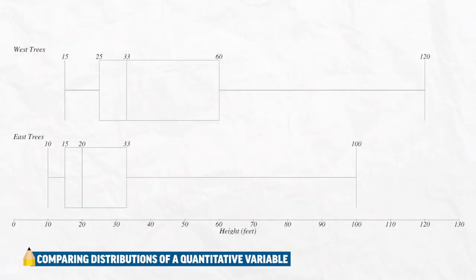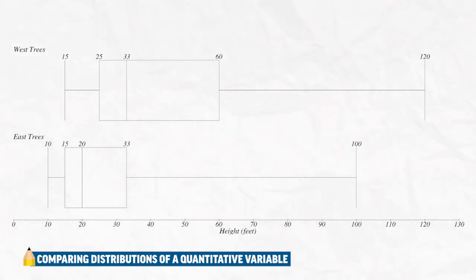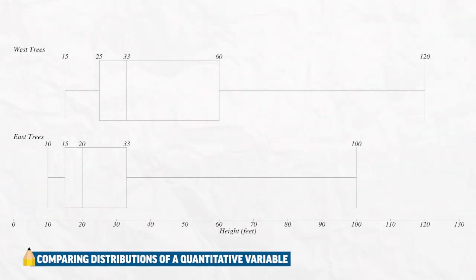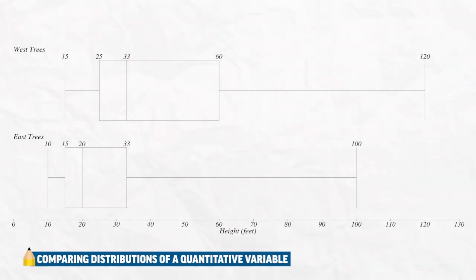Here we see what we call parallel box plots — two box plots on the same x-axis. The top represents trees from the west side of the forest, and the bottom represents trees from the east side. We'd say they're both approximately skewed to the right, since the bottom 50% on both graphs is less spread out than the upper 50%. Neither graph has any outliers. The median for the east trees is 20 feet, while the median for the west trees is 33 feet — clearly a higher center. The IQR for the west trees is way more spread out than the IQR for the east trees.